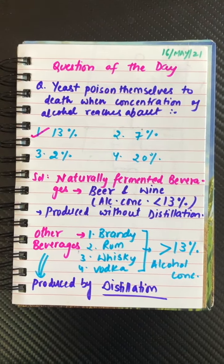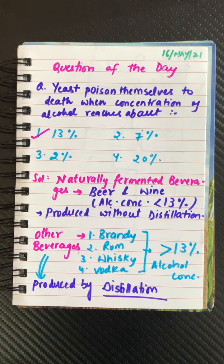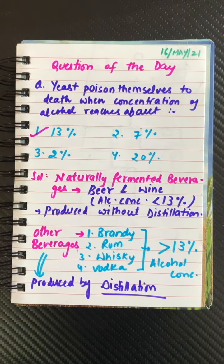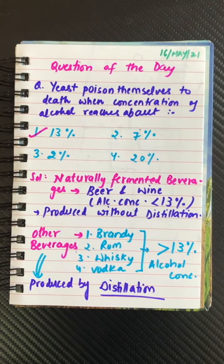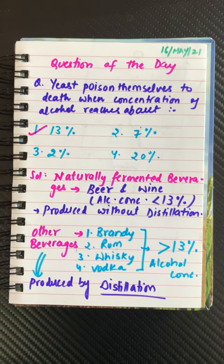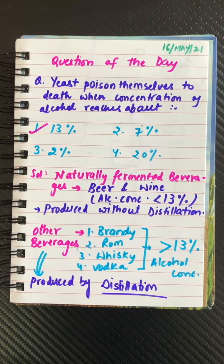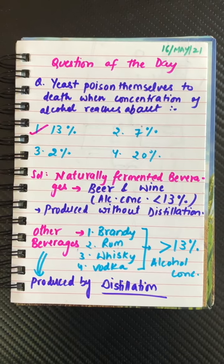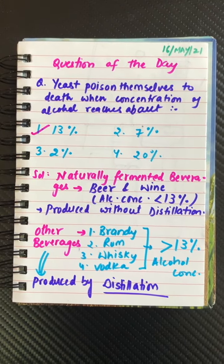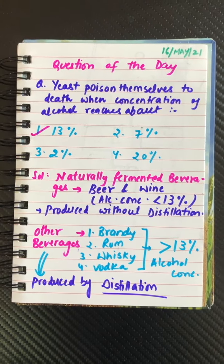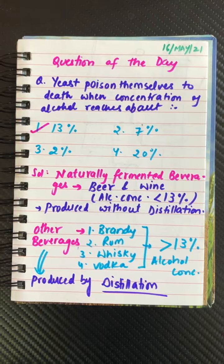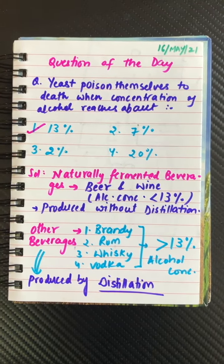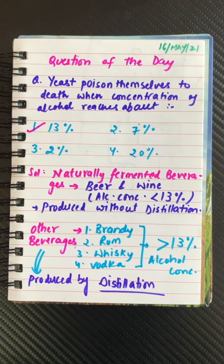As you can see, other beverages like brandy, rum, whisky, and vodka all have alcohol concentration of more than 13%, so we can never make them directly from yeast. If you want an alcohol concentration of more than 13%, you have to perform distillation.